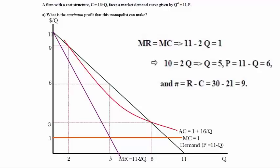Set MR equal to MC, we obtain 10 equals 2Q, or Q equals 5, which gives us P equals 11 minus 5 equals 6. So revenue is 5 times 6 equals 30. With the cost equation C equals 16 plus Q, at Q equals 5, C equals 21. The profit is 30 minus 21 equals 9.